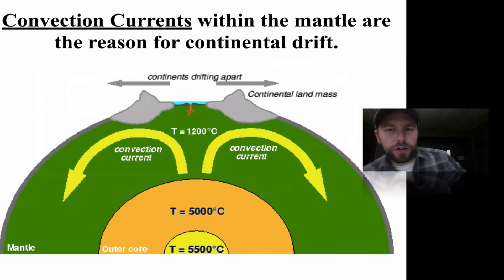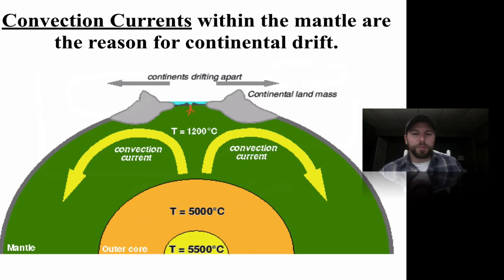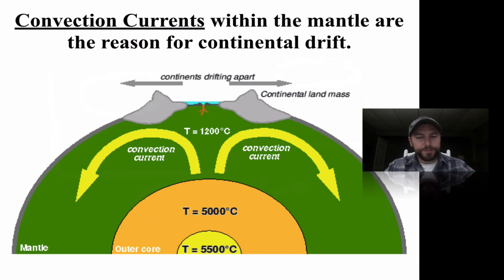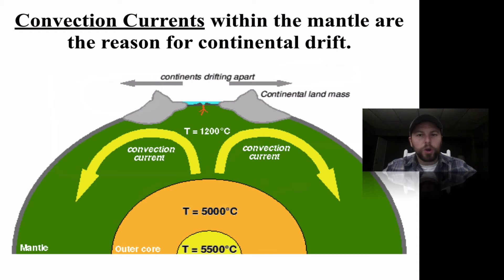Convection currents within the asthenosphere are going to drive the plates to move. So how Alfred Wegener thought about the theory of continental drift — that the continents are moving — it's actually convection currents within the asthenosphere that move those whole lithospheric plates that Harry Hess was talking about.